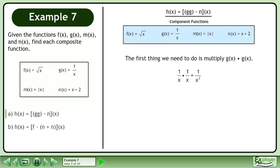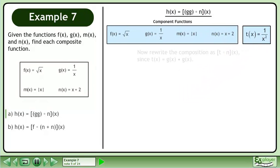The first thing we need to do is multiply g times g. This gives us 1 over x times 1 over x equals 1 over x squared. Let's assign 1 over x squared to the function t. Now rewrite the composition as t, since t equals g times g.